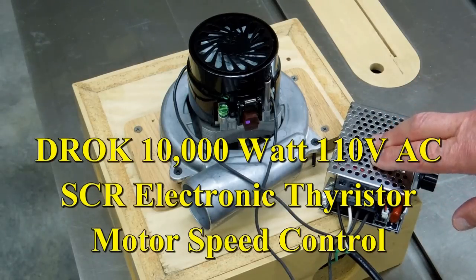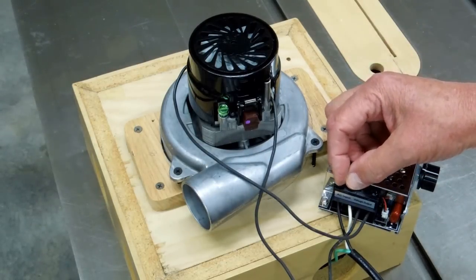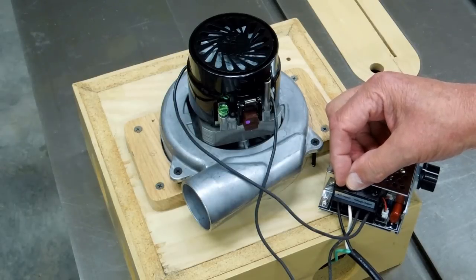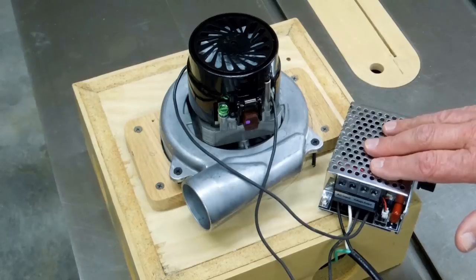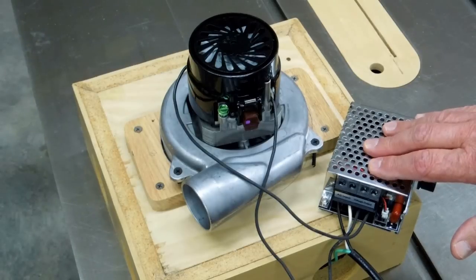This is an SCR Thyristor motor speed control. 60 cycle line voltage is input at this point, and the motor is connected at this point. The motor controller pretty much maintains peak-to-peak voltage and varies the frequency, or how much of this frequency cycle the motor sees.